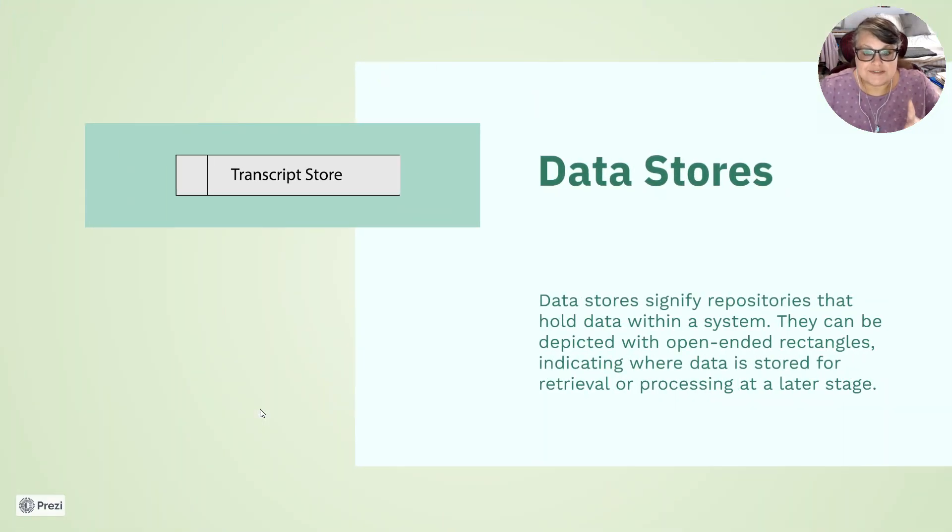Data stores or where it stores the information. Data stores signify repositories that hold data within a system. They can be depicted with open ended rectangles indicating where data is stored for retrieval and processes at a later stage. You see this transcript, I need to use the mouse. You see this transcript rectangle. It's missing one of the lines on the end. You do a rectangle and then you don't put a line on one side of the end.